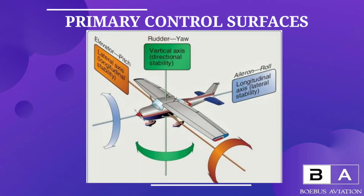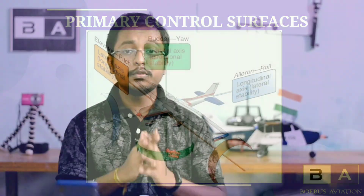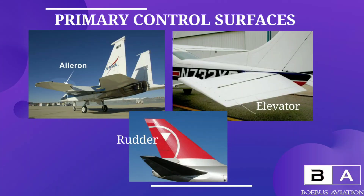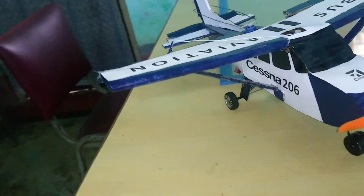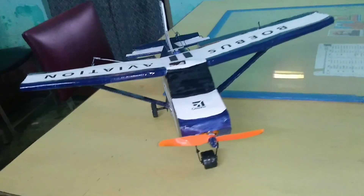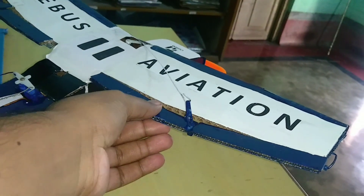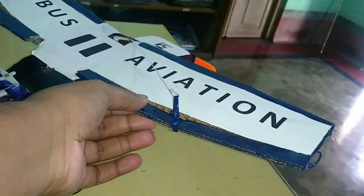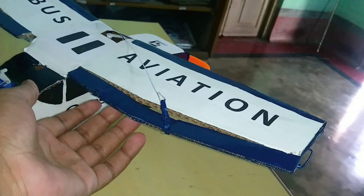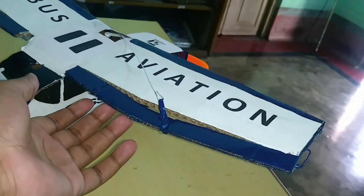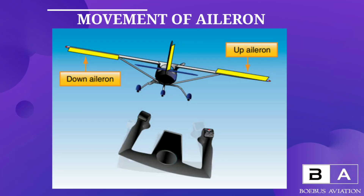The first one is your primary control surfaces, which are the most important ones responsible for the aircraft manoeuvre. These mainly include three control surfaces: aileron, elevator and rudder. I am holding this RC aircraft model which I have made some days before. This is the aileron which is connected at the back, or in aviation terms, at the trailing edge of the wing. It gives the banking or rolling movement of the aircraft. Its movement is such that if one goes up, the other will automatically go down.